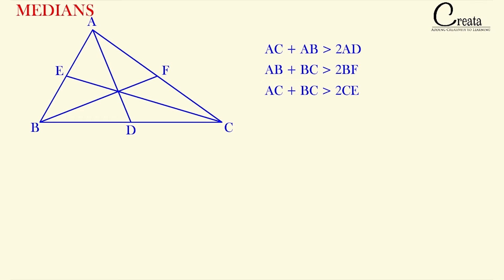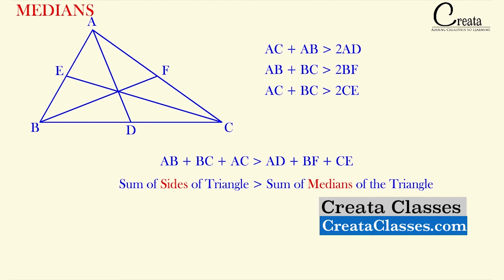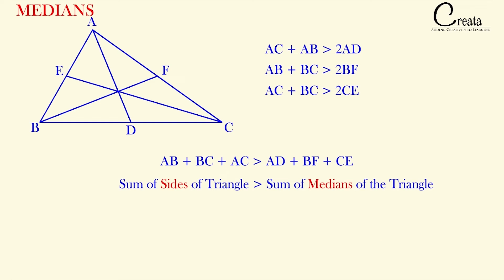Please note it down. Based on this relation, we can derive that AB + BC + AC is greater than AD + BF + CE — that is, the sum of the three sides of the triangle is greater than the sum of the medians of the triangle. Here AB, BC, and AC are the three sides, and AD, BF, and CE are the three medians. The sum of the three sides is always greater than the sum of the medians.